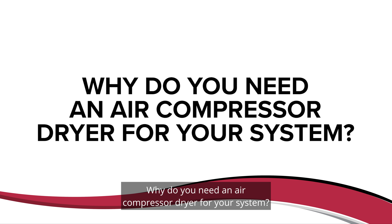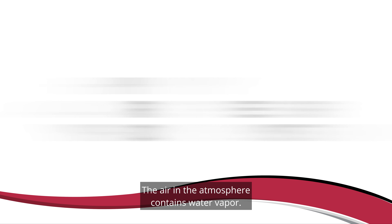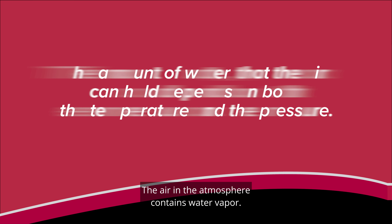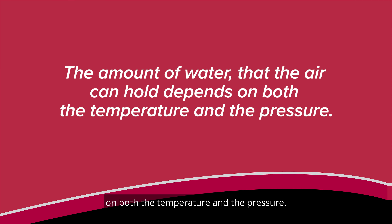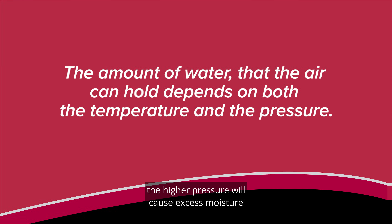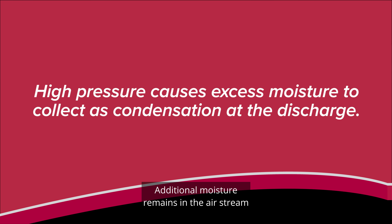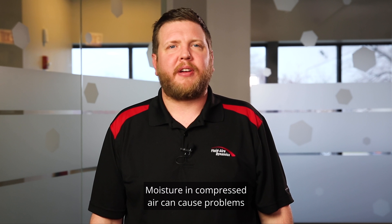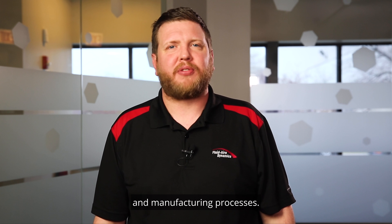Why do you need an air compressor dryer for your system? A compressed air dryer removes the moisture from the air that comes out of the compressor. The air in the atmosphere contains water vapor. The amount of water that the air can hold depends on both the temperature and the pressure. As air is compressed, the higher pressure will cause excess moisture to fall out of the air as liquid condensation at the discharge of the air compressor. Additional moisture remains in the air stream as water vapor. Moisture in compressed air can cause problems in the compressed air system, pneumatic equipment, and manufacturing processes.